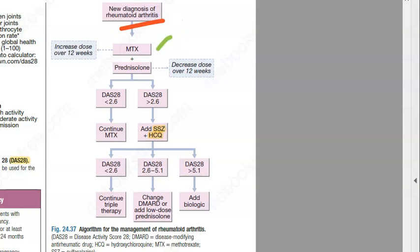So methotrexate and prednisolone. Methotrexate is an increasing dose, prednisolone is a decreasing dose. Now based on this DAS score, that is the Disease Activity Score 28.